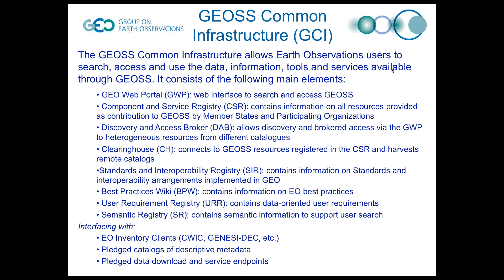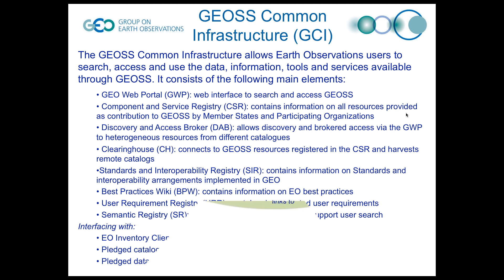You would interact with the component and service registry to register your resources, and once approved, you would see them in the GeoWeb portal. The fifth bullet is the Standards and Interoperability Registry, which contains information on standards and interoperability arrangements — both ad hoc and official standards implemented or endorsed by GEO. It's like a taxonomy or set of codes and definitions from the standards world, including OGC standards, ISO standards, and web standards relevant for data access.